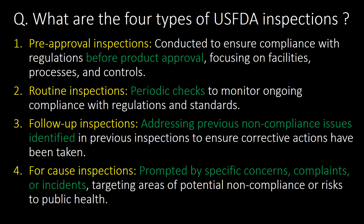What are the four types of USFDA inspections? First is pre-approval inspections, done before product approval. Second is routine inspections, conducted as a periodic check. Third is follow-up inspections, done to address previous non-compliance issues identified. Fourth is for-cause inspections, prompted by specific concerns, complaints, or incidents.